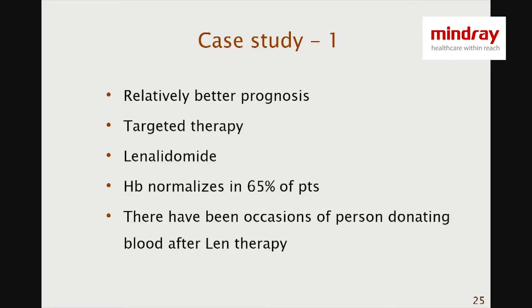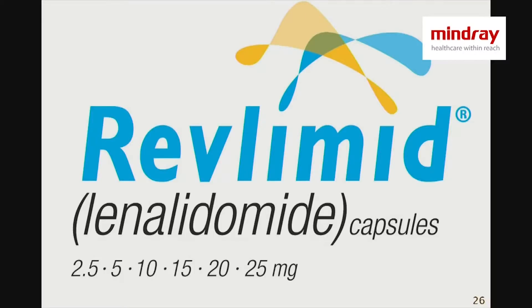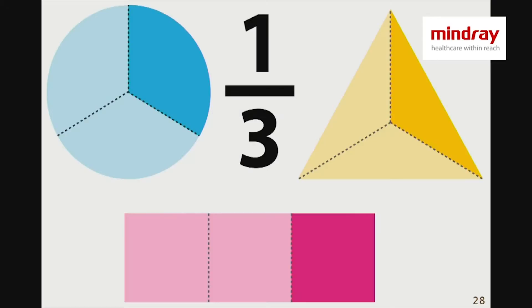There is a breakthrough. Today we have a targeted therapy in the form of a drug called lenalidomide, which can normalize the hemoglobin of two out of three patients with 5Q- syndrome. There are occasions where the hemoglobin goes above normal and the person has donated blood. Two out of three for an MDS is fantastic, but one-third of these patients, who otherwise were given a good prognosis, do not respond.